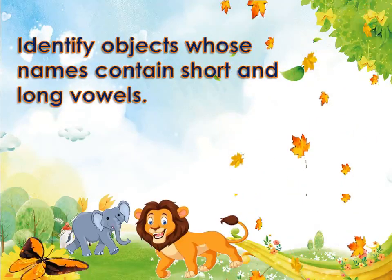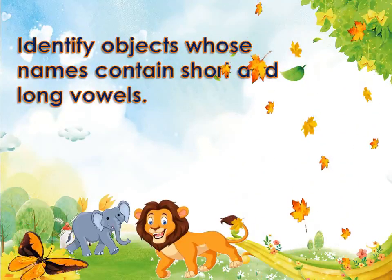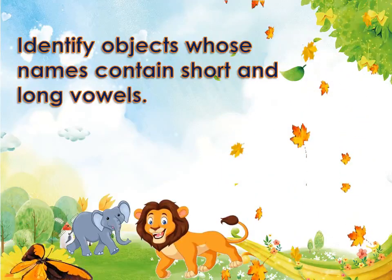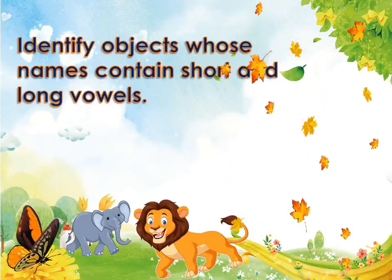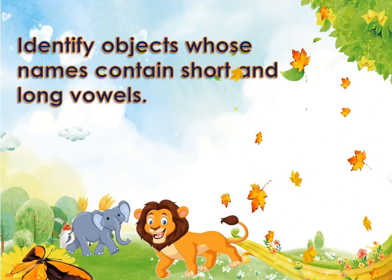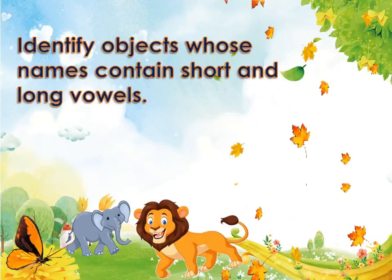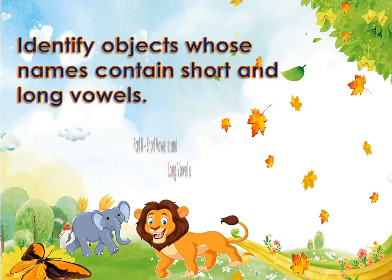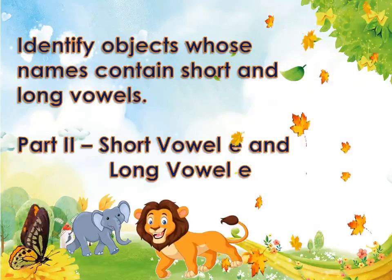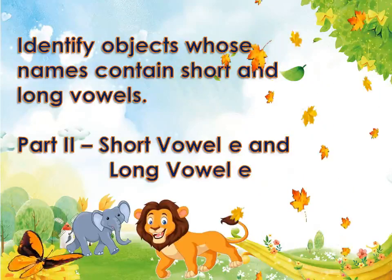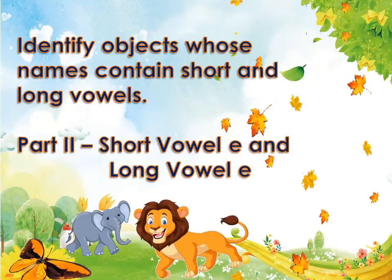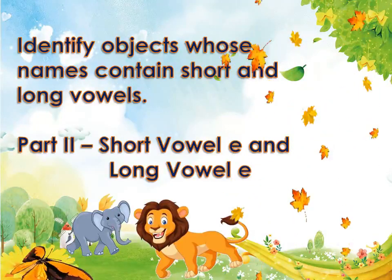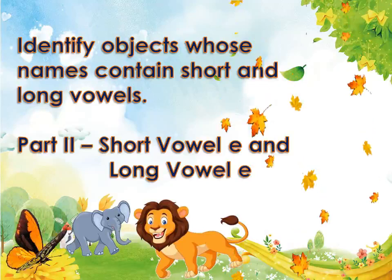The objective of this lesson is to identify objects whose names contain short and long vowels. Part 2 of this video covers short vowel E and long vowel E.